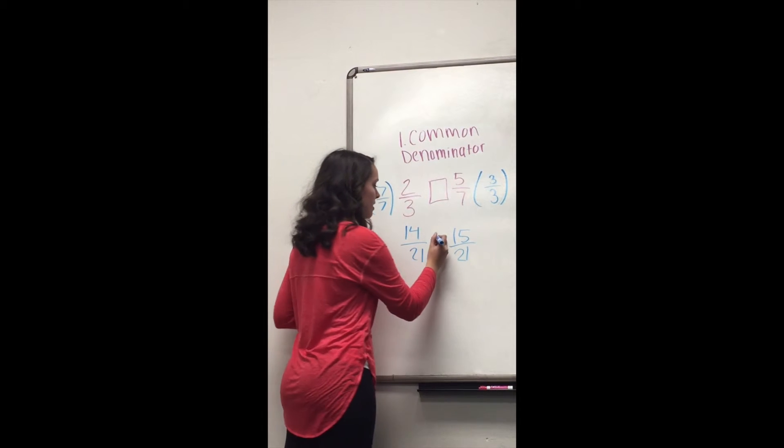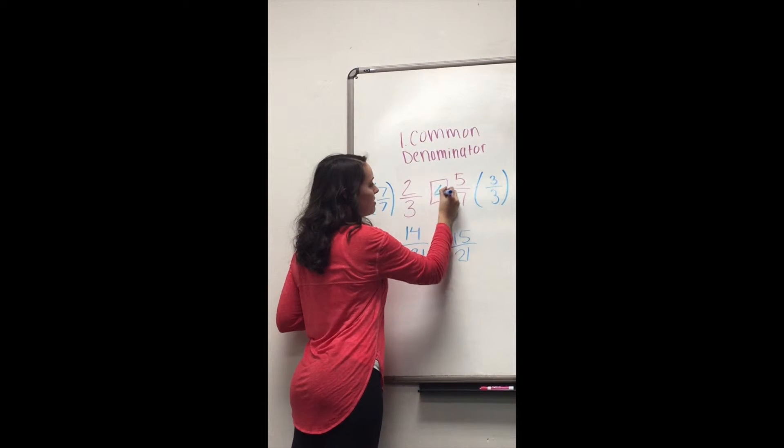14 is less than 15. Therefore, 2 thirds is less than 5 sevenths.